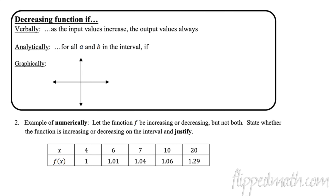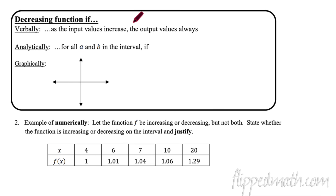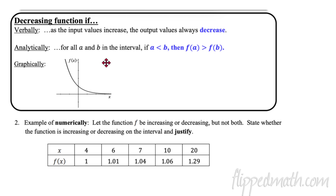Instead of me just giving you the decreasing function definition, use the increasing function as a model to fill out the decreasing function box — go ahead and pause the video. For a decreasing function: as the input values increase (go to the right on the horizontal axis), the output values always decrease. Analytically, if a is less than b, then f of a is greater than f of b. That's how it decreases. Graphically, we get a downward graph. But there is one part of VANG we're leaving out — the numerical part.